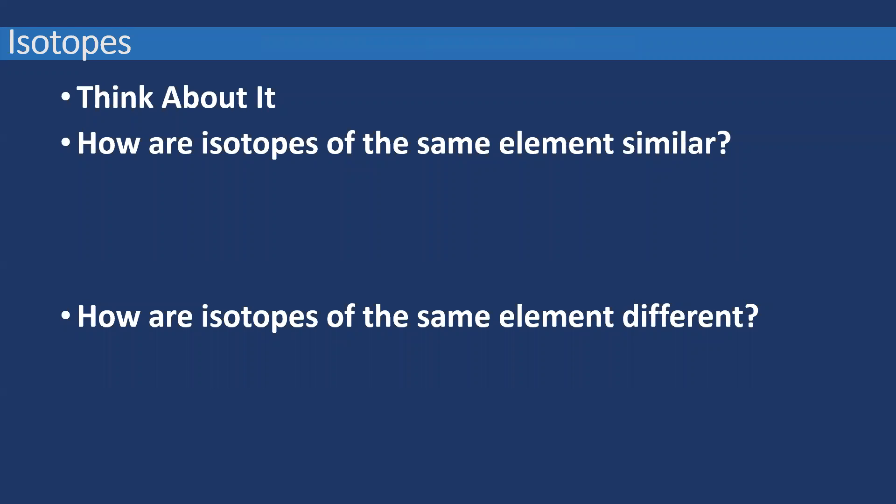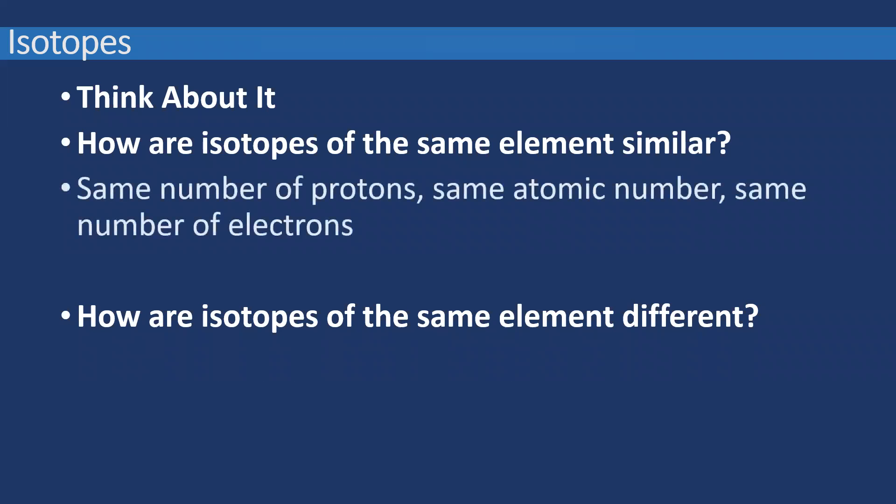So let's think about this. How are isotopes of the same element similar? They have the same number of protons, same atomic numbers, same number of electrons. How are isotopes different though? Different atomic masses and different number of neutrons. So that's the main idea behind isotopes.